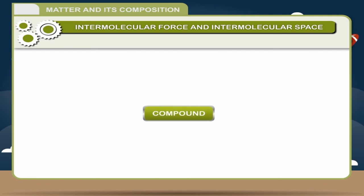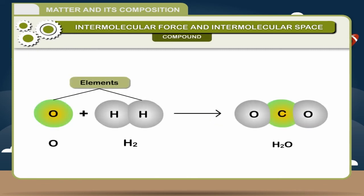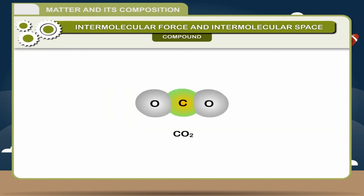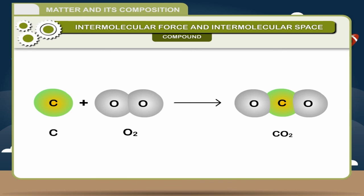Compound. When two or more elements combine together in a chemically fixed proportion to form a new substance, the newly formed substance is called a compound. Most common example of a compound is water. It is a combination of hydrogen and oxygen molecules in fixed proportion of two is to one. Another example of compound is carbon dioxide. It is made up of carbon and oxygen molecules combined together in a fixed proportion of one is to two respectively.